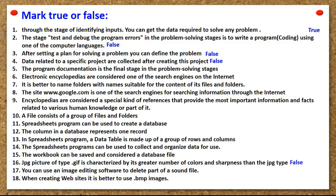The program documentation is the final stage in the problem-solving stages. Electronic encyclopedias are considered one of the search engines on the internet. It is better to name folders with names suitable for the content of its files and folders. The site www.google.com is one of the search engines for searching information through the internet. Encyclopedias are considered a special kind of references that provide the most important information and facts related to various human knowledge or part of it.